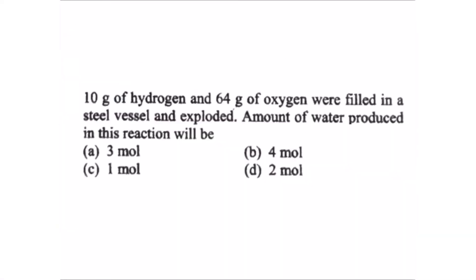10 grams of hydrogen and 64 grams of oxygen were filled in a steel vessel and exploded. The amount of water produced in this reaction is what we need to find. The reaction is hydrogen plus oxygen, and this is a stoichiometry problem involving a limiting reagent.